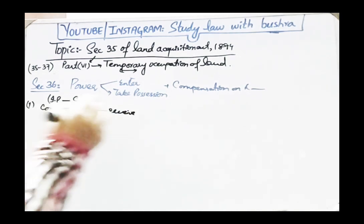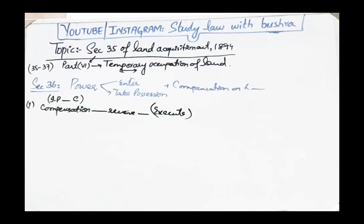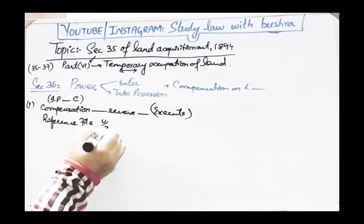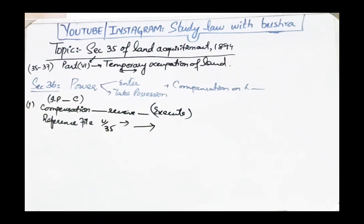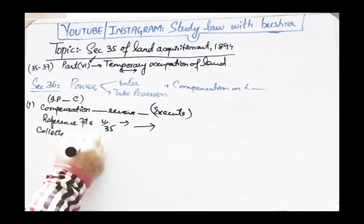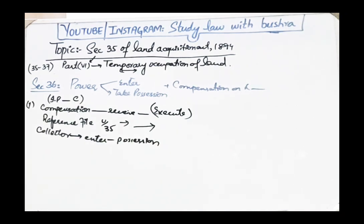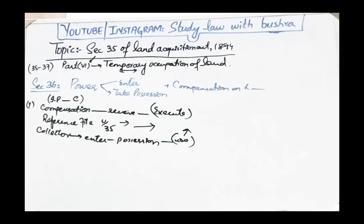Once compensation has been received by the interested person, the agreement has been executed, or a reference under Section 35 has been filed in the concerned court — after all these steps are completed — it becomes lawful for the Collector to enter upon the land and take possession of it. After taking possession, the Collector may use the land for the purpose mentioned in the agreement.